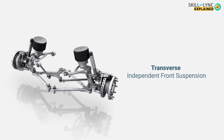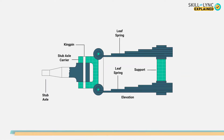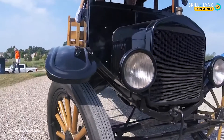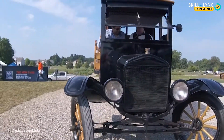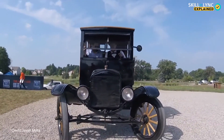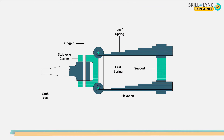The second type is the transverse independent front suspension. This figure illustrates the transverse independent front suspension system arrangement. Its usage was well known in Ford Motor Company products from 1908 to 1948. At the front portion of the vehicle, two trailing arms are connected transversely one above the other. The stub axle assembly is connected to the end of the arms, and radius rods were used to support the center line of the vehicle.